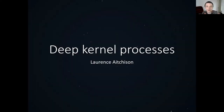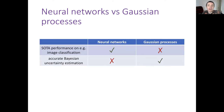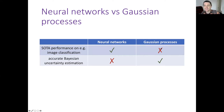Today I'm going to tell you about deep kernel processes, but more importantly the process by which we got there. There are two models that are now very big and popular that we all care about: neural networks and Gaussian processes. They have almost completely different advantages. Neural networks perform really well on tasks such as image classification, while Gaussian processes are still less effective on these types of tasks.